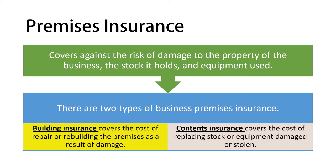People and organizations can insure themselves against different kinds of risk. In this video I'm going to talk about some of the risks which we can insure. We'll start with premises insurance, which covers against the risk of damages to the property of the business, the stock it holds, and equipment loss.